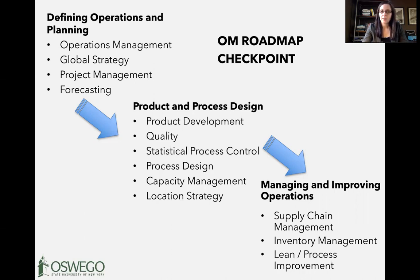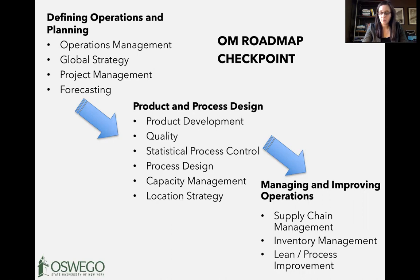Now we're moving into the second half of the semester, which is really focused on product and process design. Today we'll talk about product development. Next week we'll cover quality, including statistical process control — a quantitative method to help us identify where to improve quality. We'll also cover process design, value stream flow, capacity management, and location strategy.